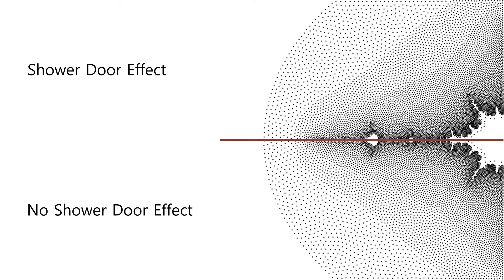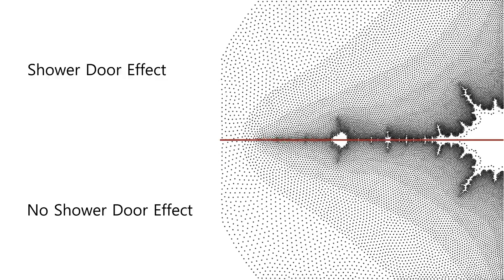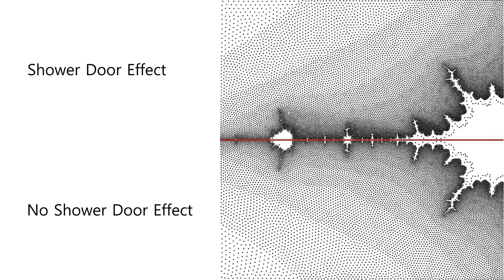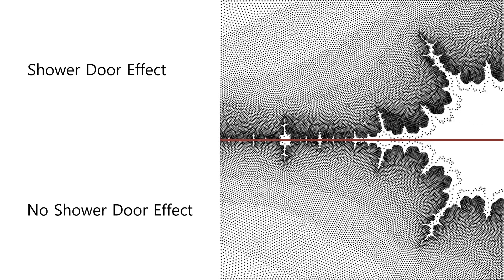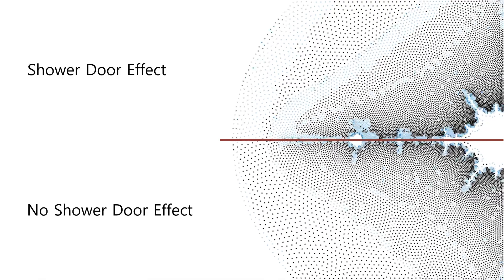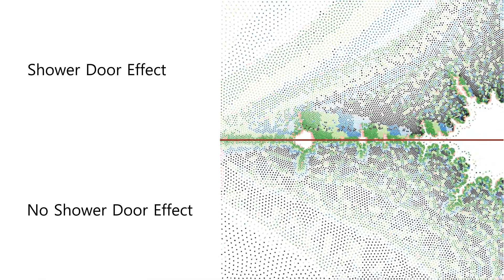Our algorithm can also be used for animation purposes. For each frame of the animation, we take the points from the previous frame as initial points for the iteration. If the optical flow is known, we move the points according to the optical flow and then apply LBG stippling. This way, we can avoid the shower-door effect.